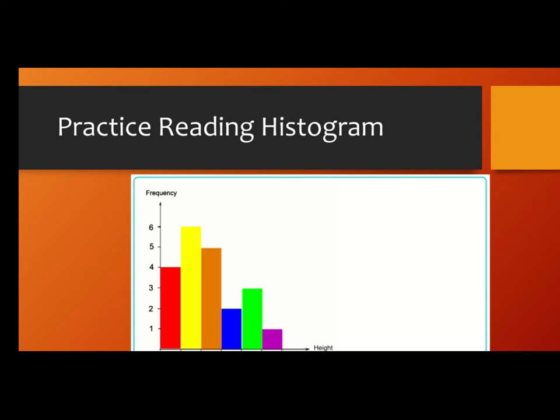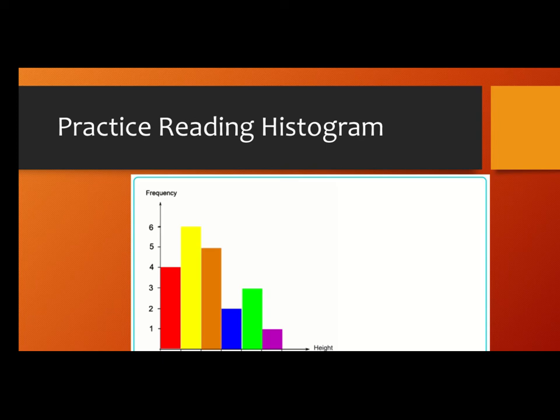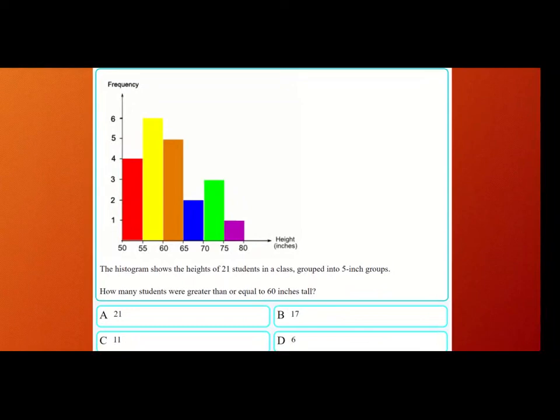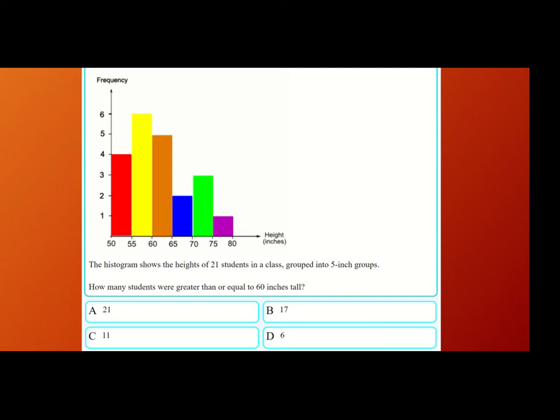In class today we practiced reading histograms and you all did a very good job, so excellent work with that. This is one more example working with trying to read histograms. This histogram in particular shows the height in inches of the students in a classroom, grouped into five-inch groups. If you have a height of 50, 51, 52, 53, or 54 inches, your height goes in this bin. If you have a height of 65, 66, 67, 68, or 69, your height goes into this bin.